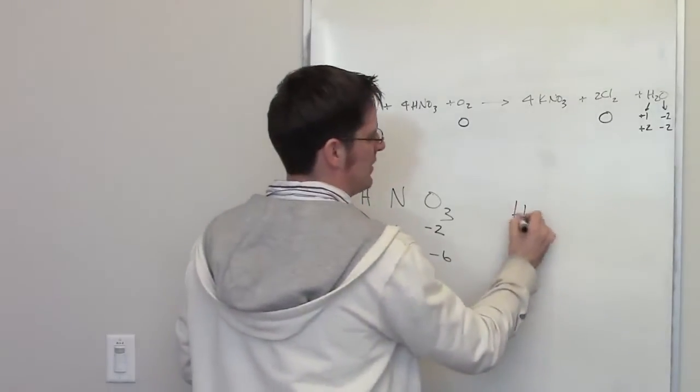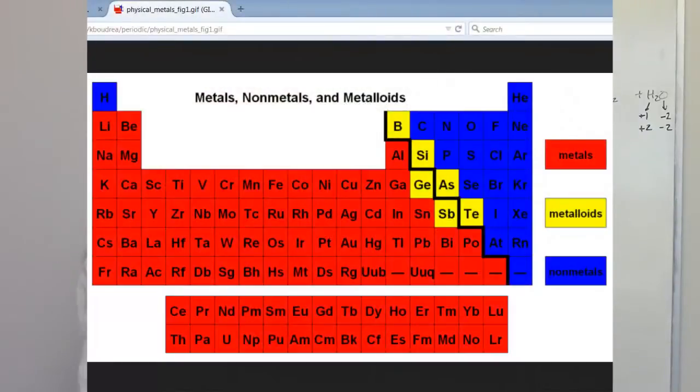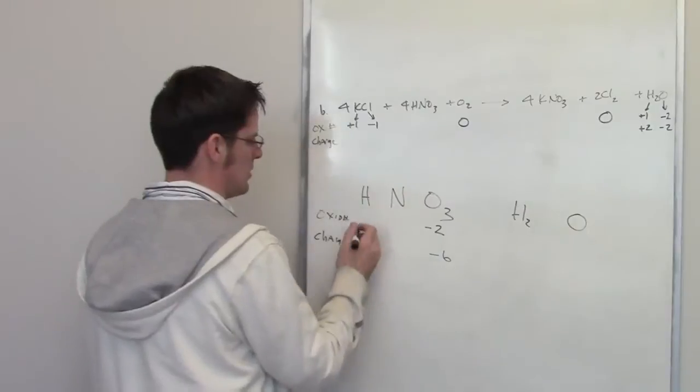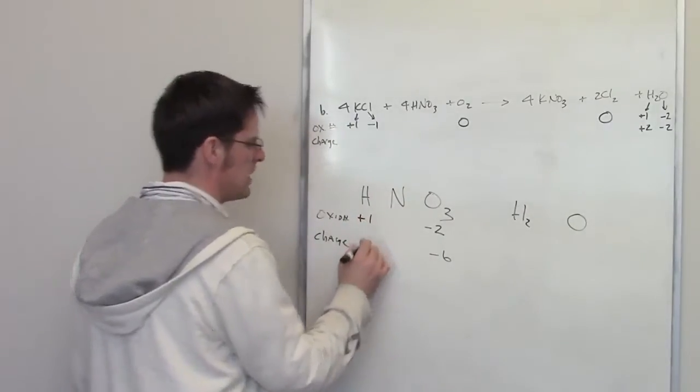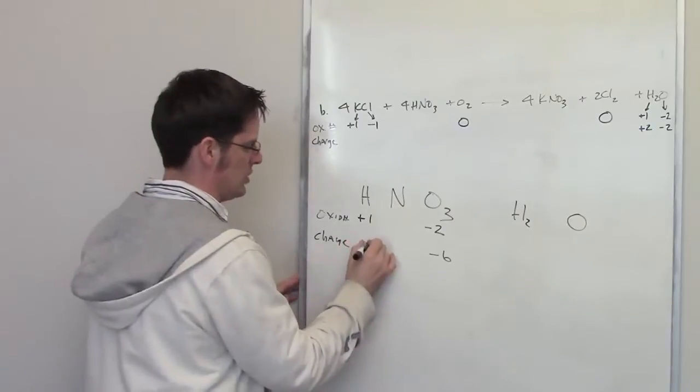Hydrogen, if it's all by itself in H2, has an oxidation number of zero. If it's bonded to a metal, then has an oxidation number of negative one, usually. If it's bonded to a non-metal, it has an oxidation number of positive one, usually. This is one of the latter cases. So I've got hydrogen here with an oxidation number of plus one. There's only one of those hydrogen atoms, so its overall charge is also plus one.